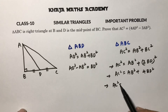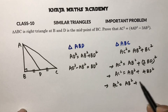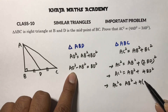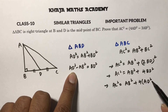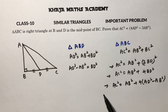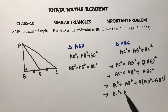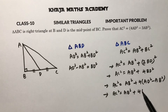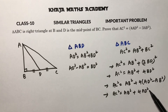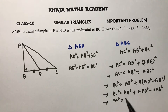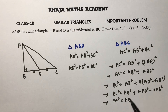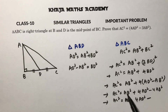So AC² = AB² + 4BD². From triangle ABD, BD² = AD² − AB². Substituting: AC² = AB² + 4(AD² − AB²) = AB² + 4AD² − 4AB². Combining the AB² terms: AB² − 4AB² = −3AB².